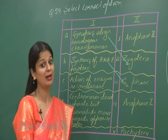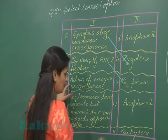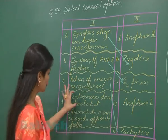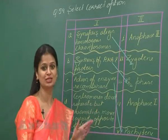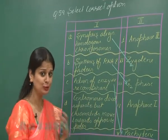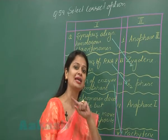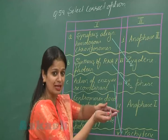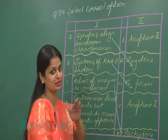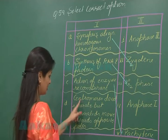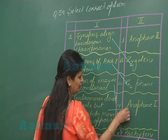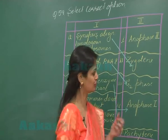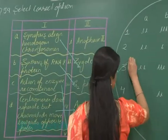Action of recombinase enzyme — this enzyme is involved in crossing over, and crossing over occurs during the pachytene stage, so recombinase activity matches option 5. Centromere do not separate but chromatids move towards opposite poles — during meiosis, centromeres split during anaphase 2. In anaphase 1, centromeres don't split; instead chromosomes move towards opposite poles. So the right answer for Q59 is option number 3.